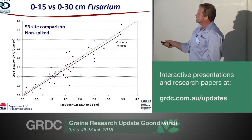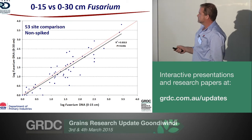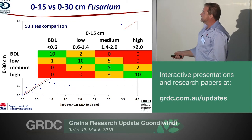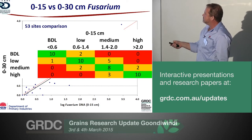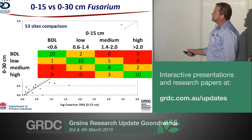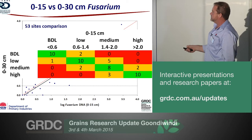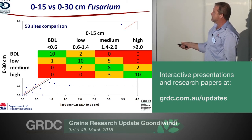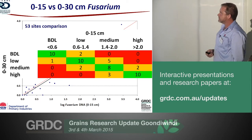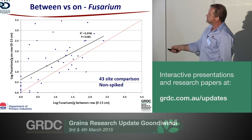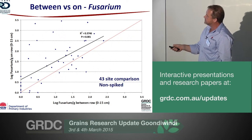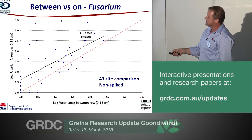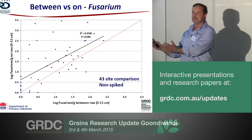For fusarium crown rot — this is only 53 site comparisons, as we had to remove sites where we spiked because spiking overrides everything. The second you spike with stubble, it doesn't matter what depth you were or whether on-row or between-row — it picks up what's in the stubble DNA. Looking at 0-15 versus 0-30, there's a bit of a tendency toward slightly higher detection at 0-15, but not a lot pulling away from the 1-to-1 line. Risk categories are tracking very similarly. Going on the row gives higher detection — some sites show very high risk on-row that would have been missed between rows. It's a stubble-borne pathogen concentrated in the stubble rows.